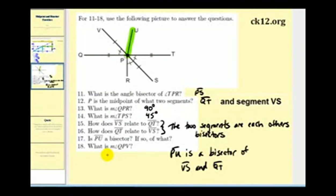And the last question, what is the measure of angle QPV? Here's angle QPV. Notice that angle QPV and angle TPS are vertical angles, and we said back on question 14 that angle TPS was 45 degrees. Therefore, angle QPV is also 45 degrees.